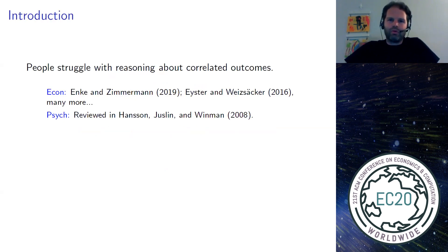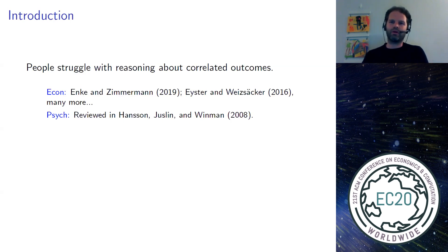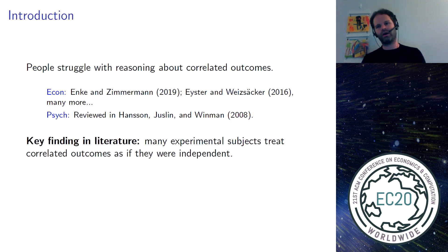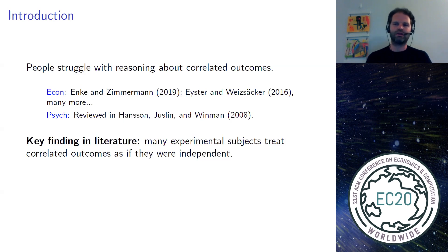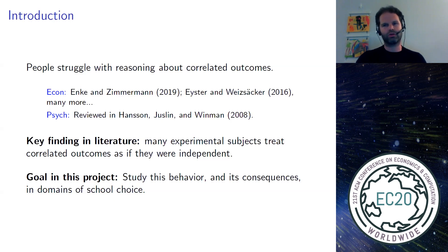Historically, people were thought to be good, intuitive statisticians, but in the early 70s, evidence began to accumulate that there are certain issues that humans struggle with. One of these issues is correlation. There is evidence that many experimental subjects treat statistically correlated events as if they're independent. Our goal in this project is to study this behavior and understand its consequences in the domain of school choice.